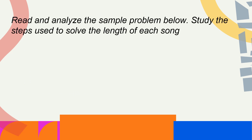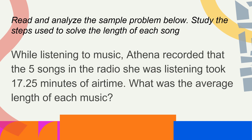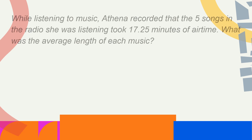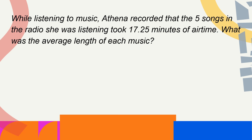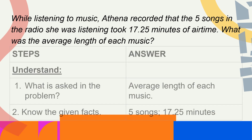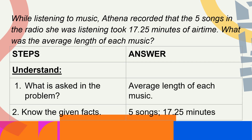So let us read and analyze the sample problem below. Study the steps used to solve the length of each song. While listening to music, Athena recorded that five songs on the radio she was listening took 17 and 25 hundredths minutes of airtime. What was the average length of each music? From the given problem, the average length of each music is what is asked, and the given facts are five songs and 17.25 minutes.